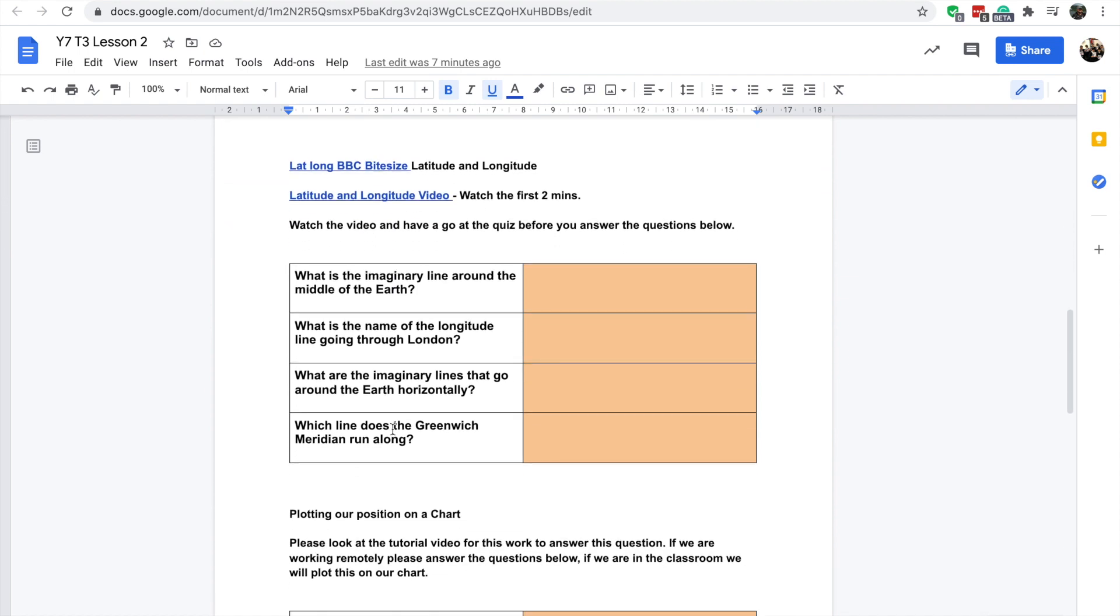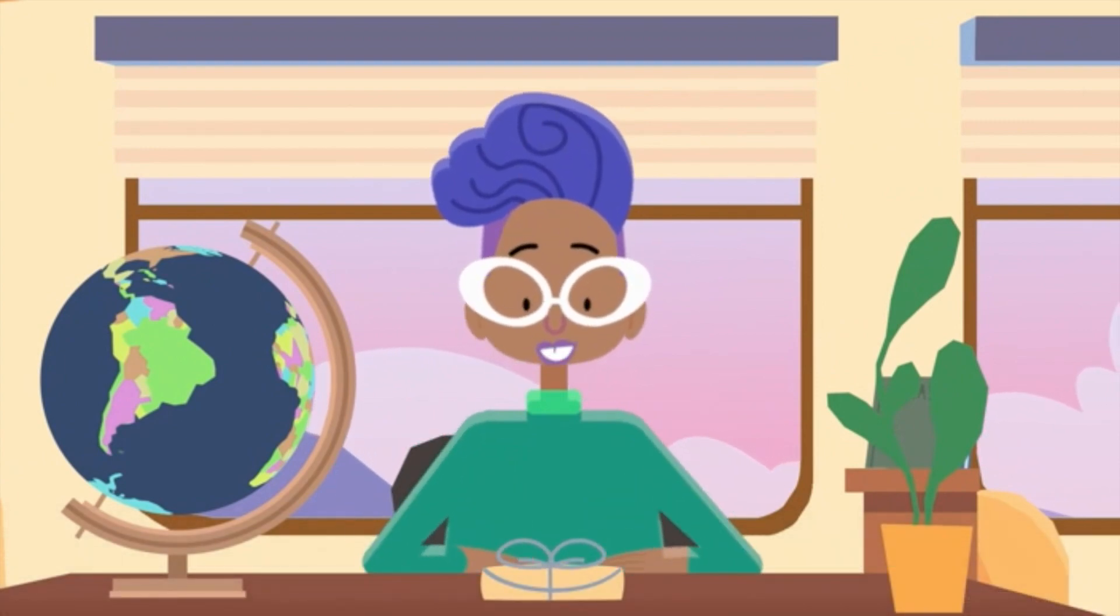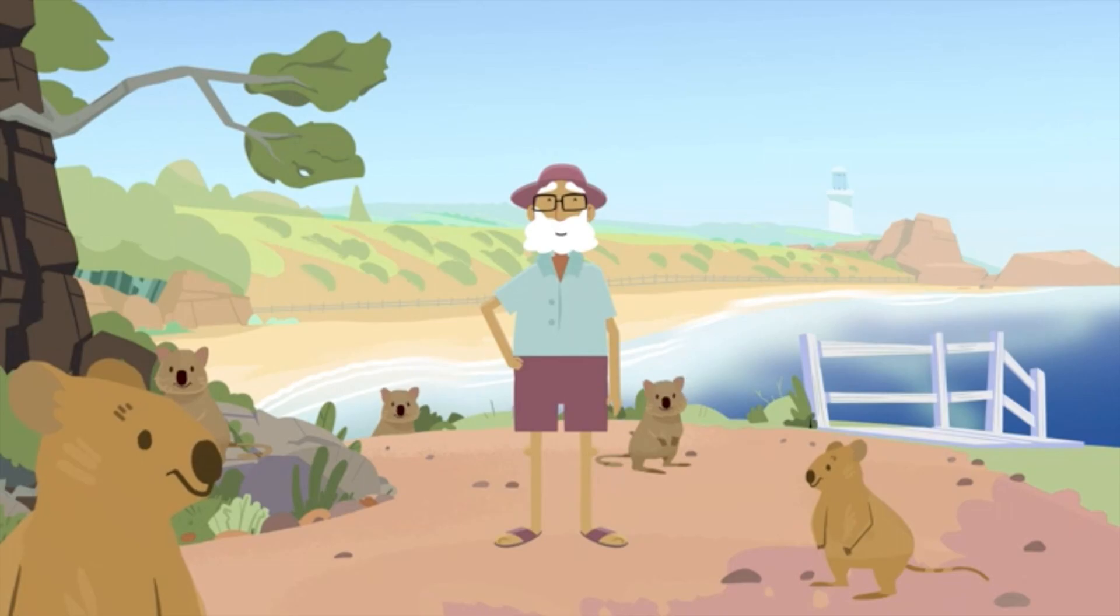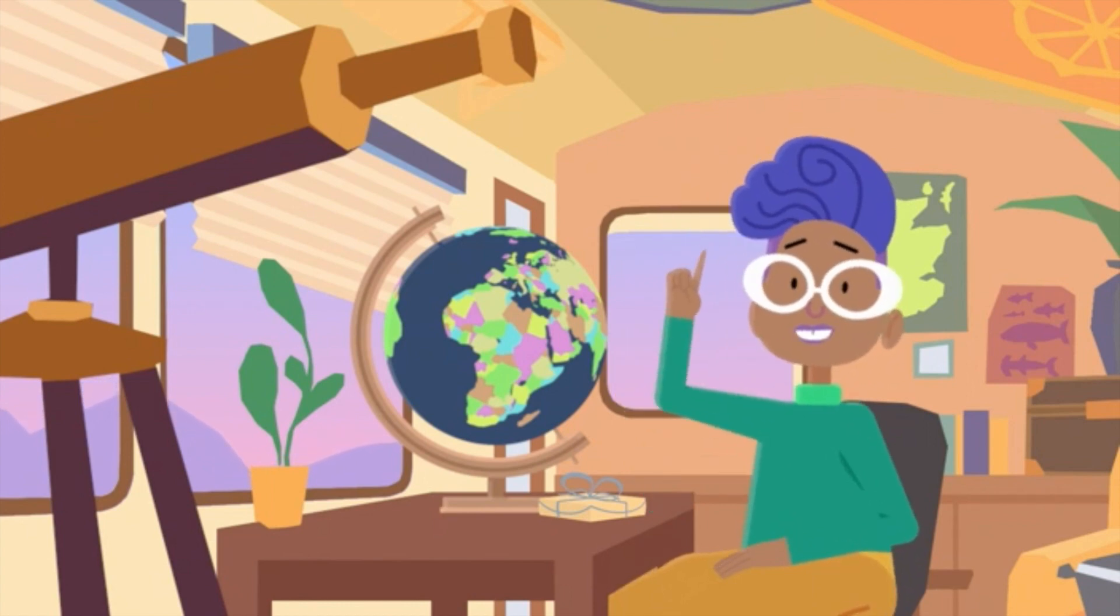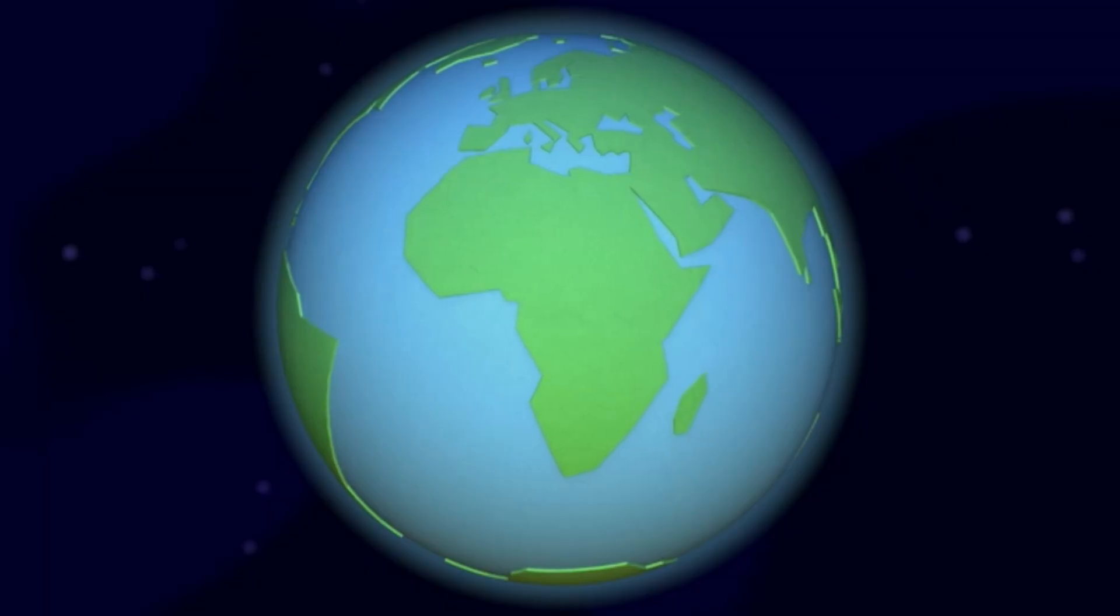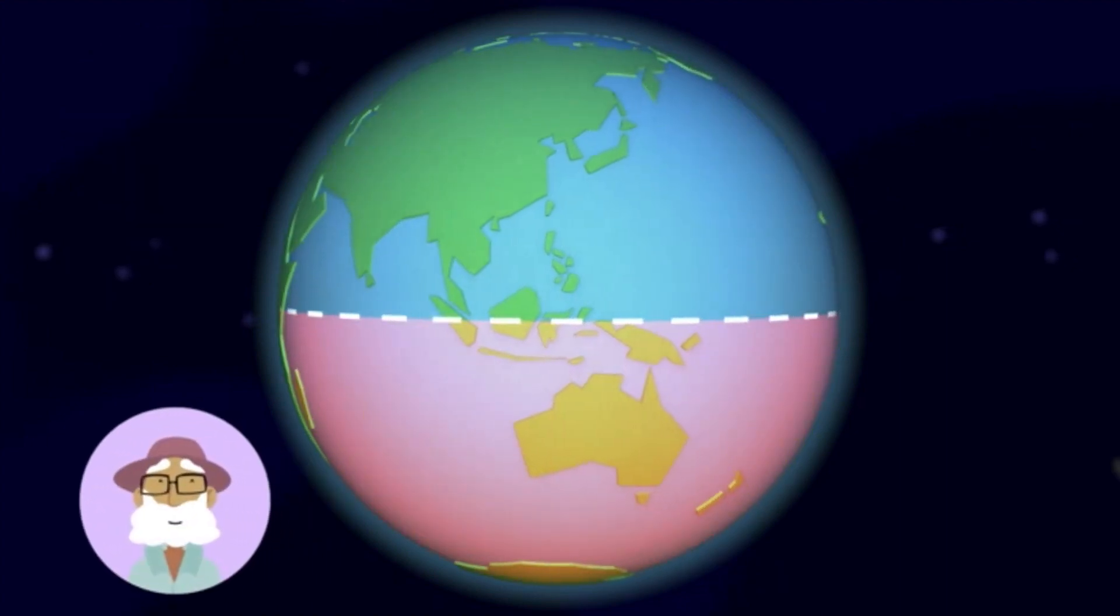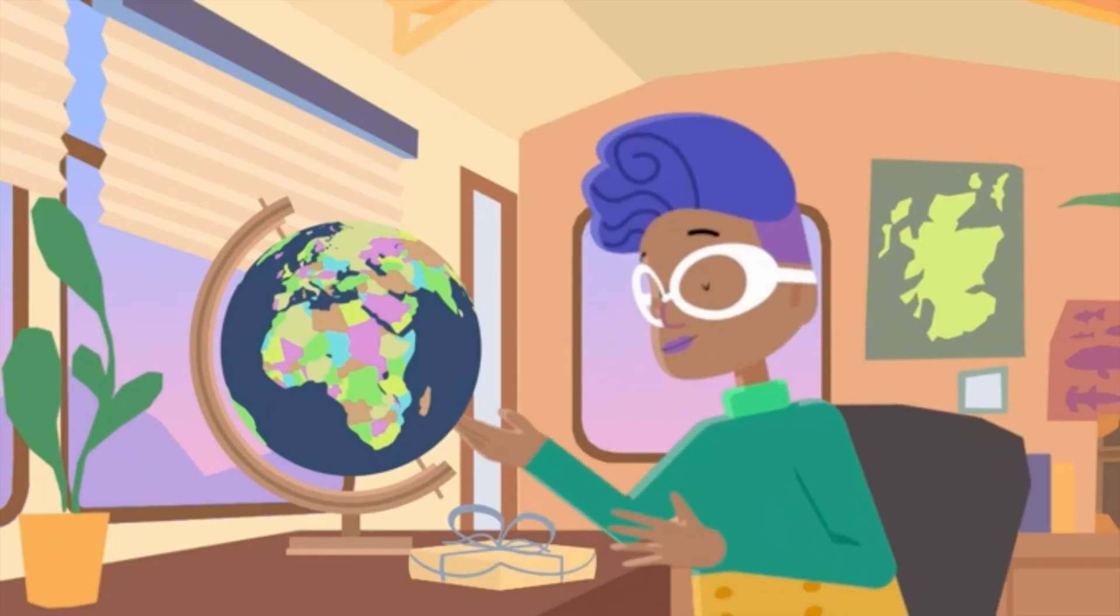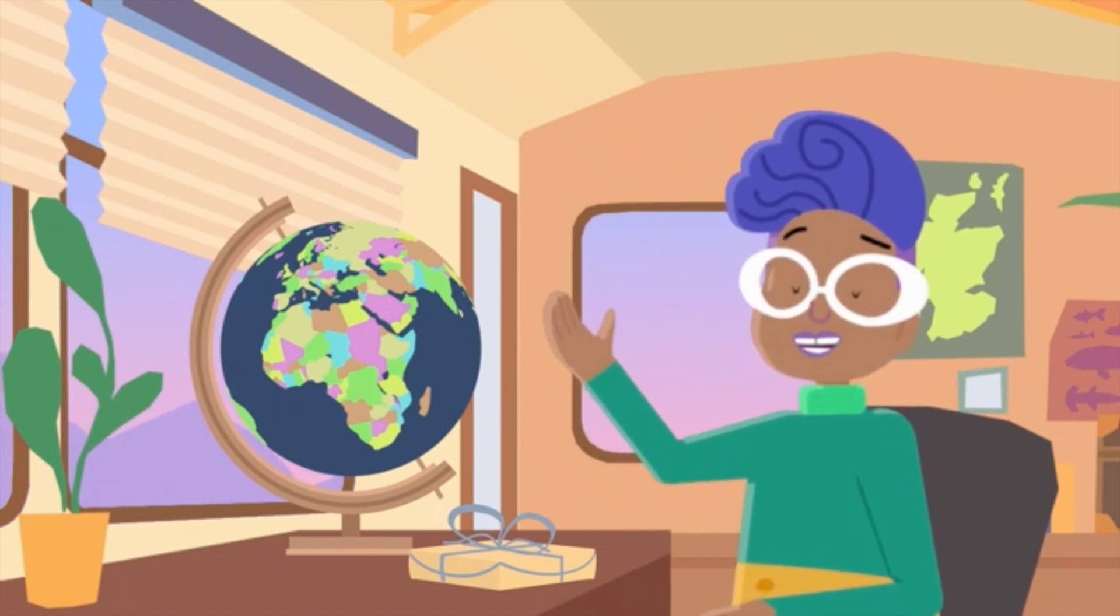So I want to talk now about latitude and longitude. Let's have a quick look at the BBC Bitesize. I've been asked to deliver this parcel to my cousin. But he lives on an island and doesn't have an address to send things to like you or me. It's not a problem though, because I know a good way to find out exactly where he lives. First, I'm going to find out which half of the earth he's on. Running around the middle of the planet is an imaginary line called the equator.